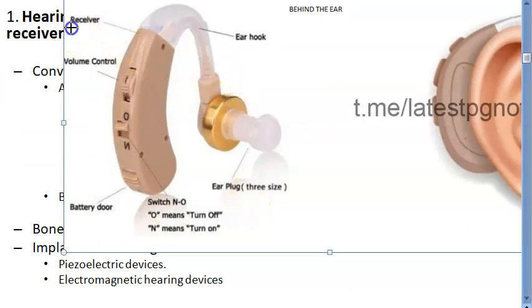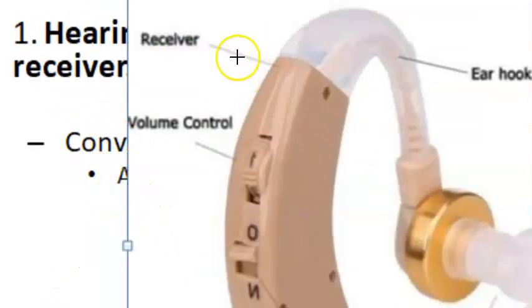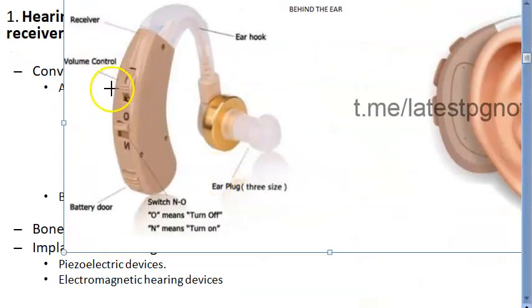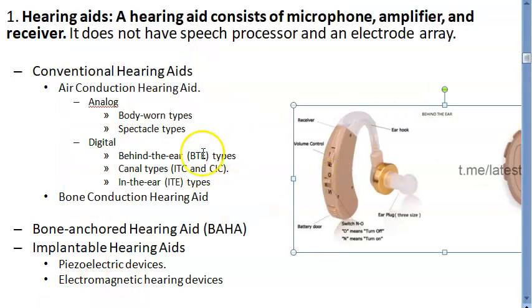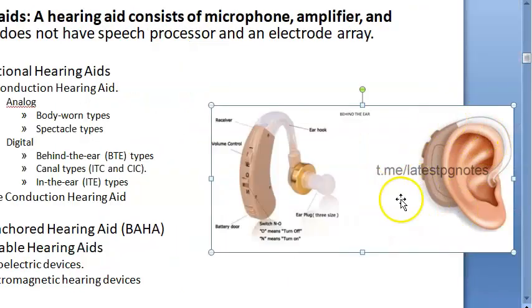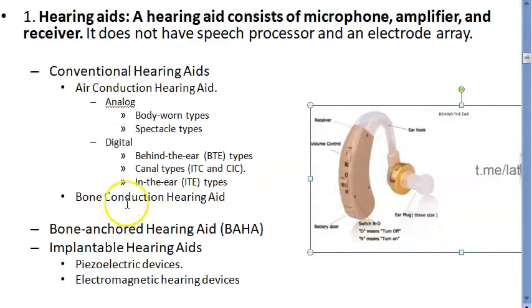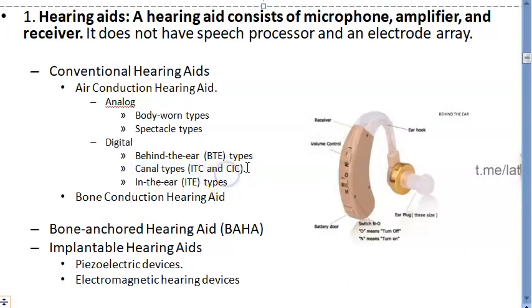Looking at the behind-the-ear hearing aid and its parts: here is the receiver, there is a volume control, an ear hook, and a battery door — so you have to put in a battery. This one sits behind the ear. Similarly, you have canal types: in-the-canal and completely-in-the-canal.